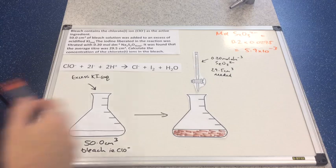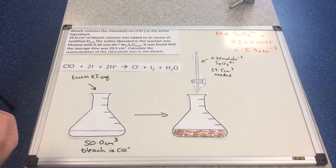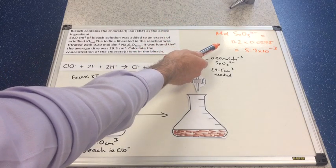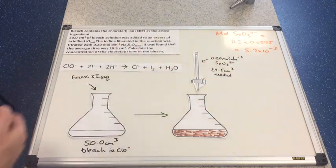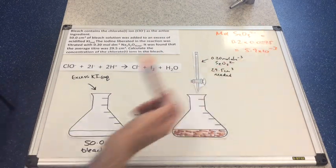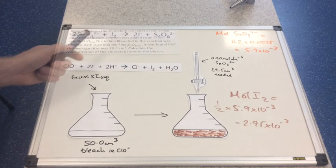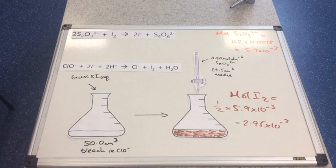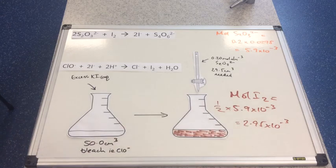Moles of thiosulfate: concentration 0.2 multiplied by the volume in dm³. That gives 5.9 × 10⁻³ mol of thiosulfate. Moles of iodine is of course half the moles of thiosulfate — you can see that calculation in brown — coming out at 2.95 × 10⁻³ mol.